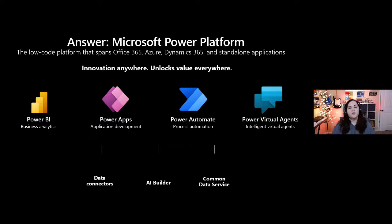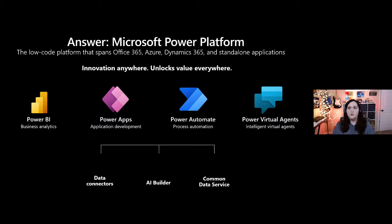What Microsoft offers in that space is something called the Power Platform — Microsoft's low-code platform that spans across Office 365, Azure, Dynamics, and standalone applications. It's comprised mainly of four different things, all set on top of what's called the Common Data Service, which is our fully integrated data model and database for the Power Platform. The four main components are Power BI, Power Apps, Power Automate, and Power Virtual Agents.